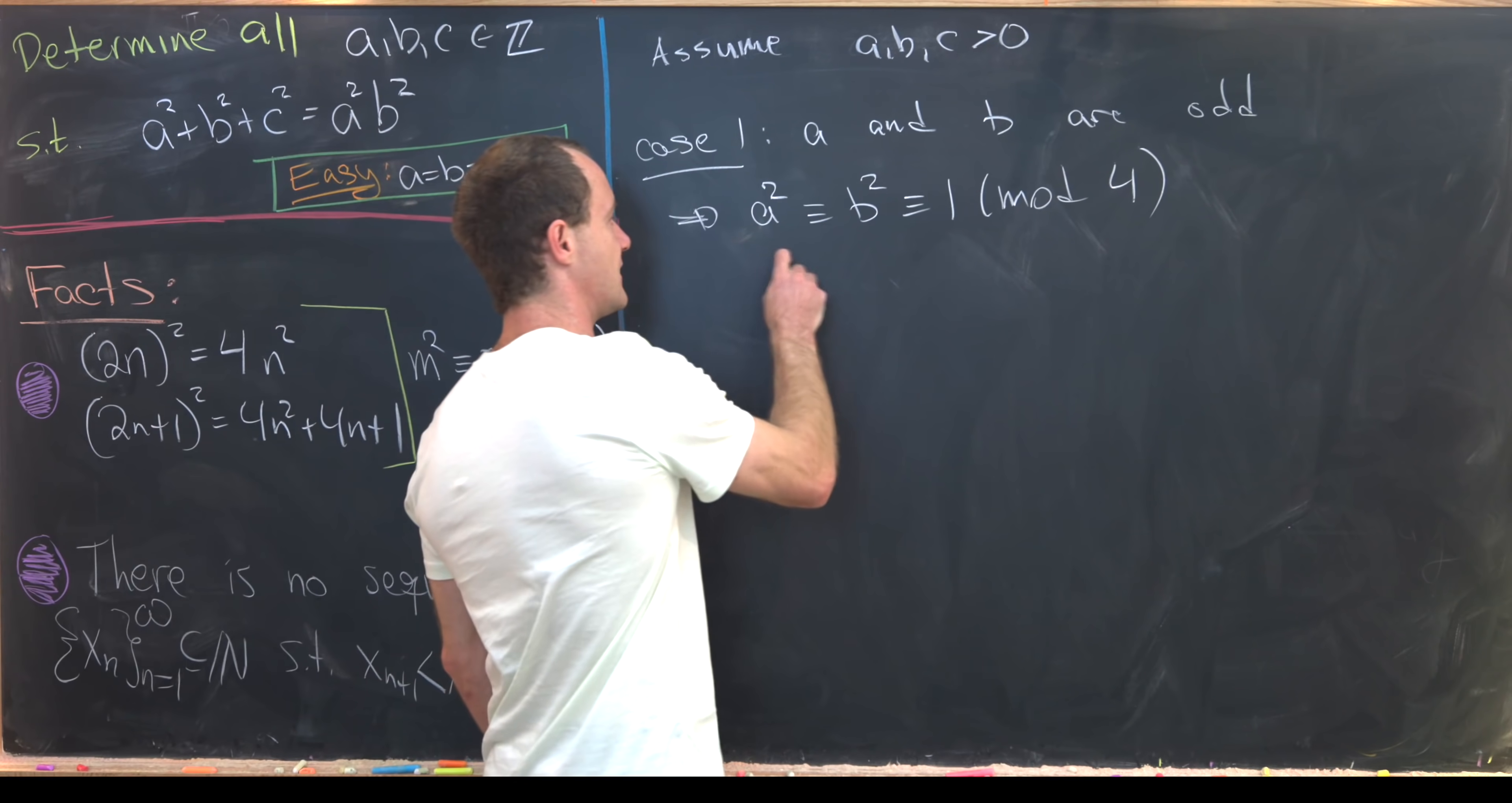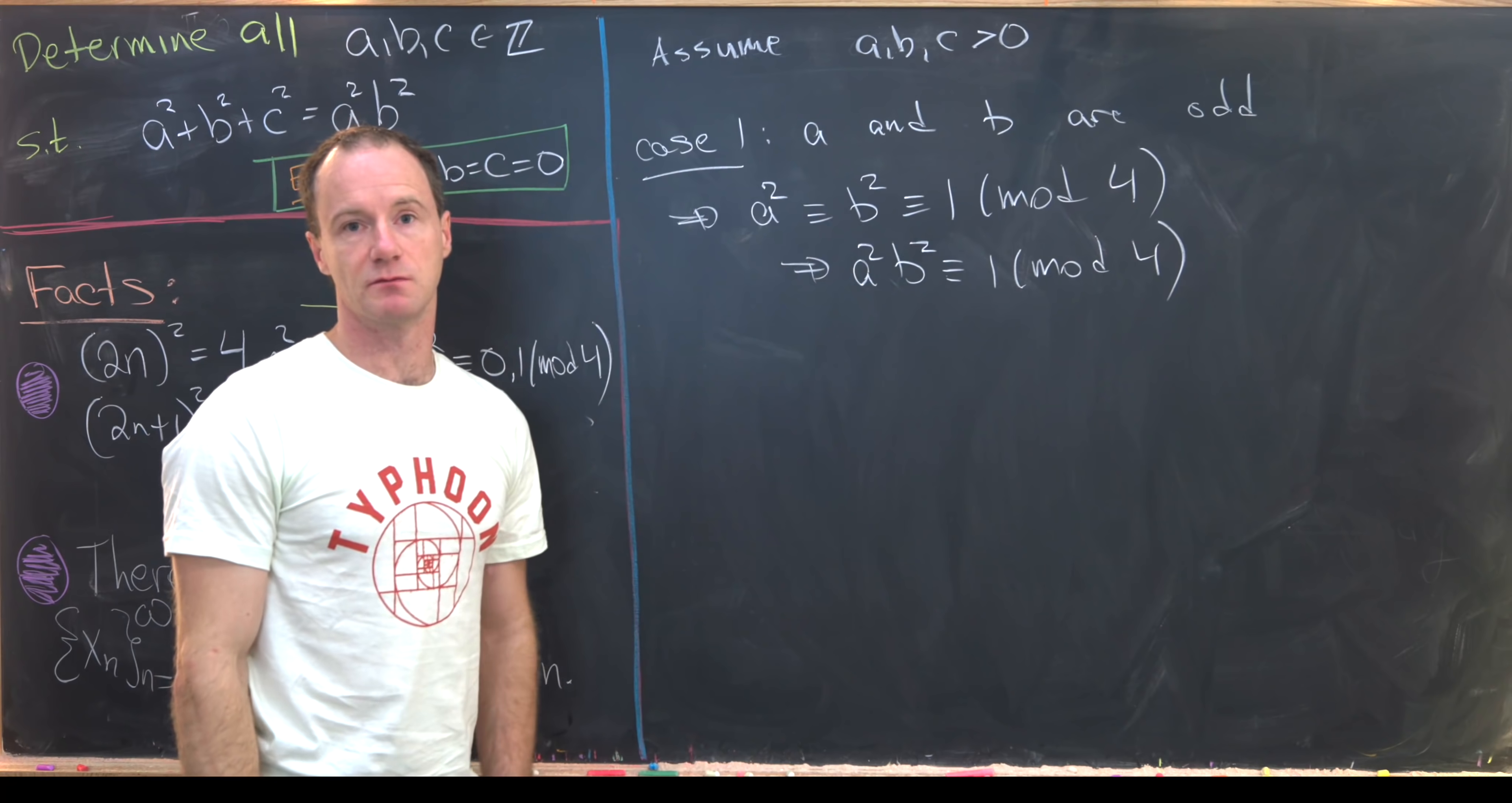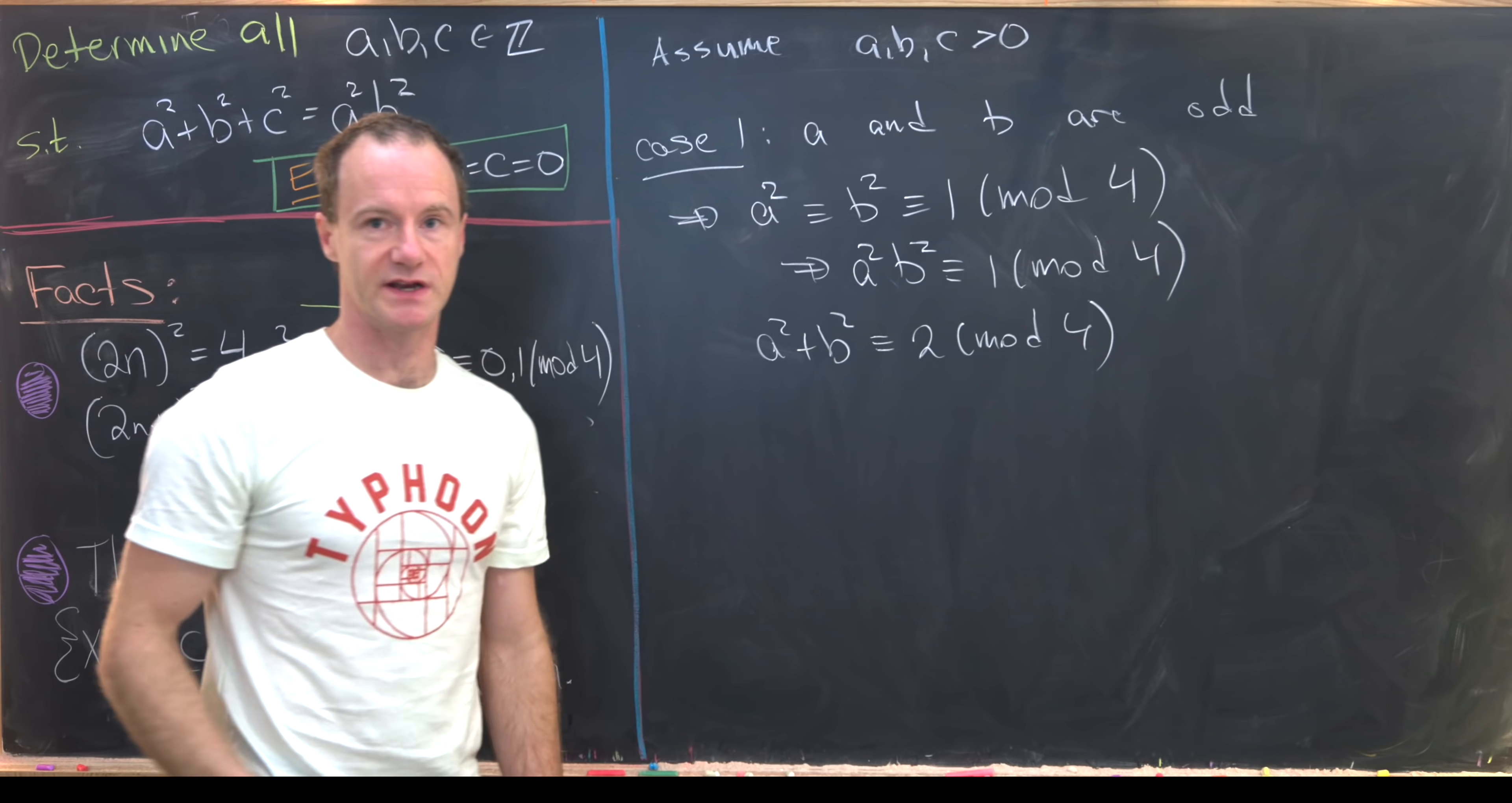But now that tells us that a²b² ≡ 1 (mod 4). That's pretty clear because we're multiplying two things that are 1 mod 4. And then a² + b² ≡ 2 (mod 4) because 1 + 1 is 2.